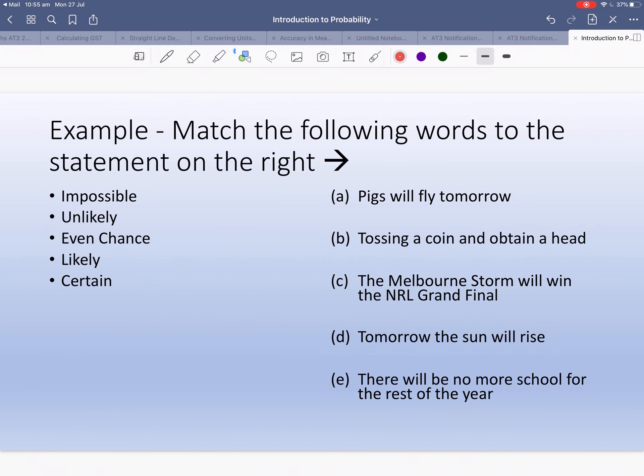All we're going to do now is just match the possibilities - impossible, unlikely, even chance, likely and certain - to these things. Pigs will fly tomorrow - I feel like tomorrow's too soon, so that's impossible. Tossing a coin and obtaining a head, that looks like an even chance. Why don't you pause the video and finish off this example and see if you get the same as me.